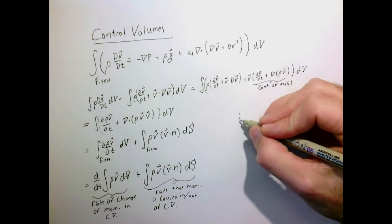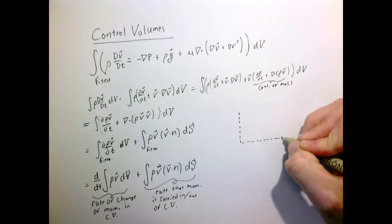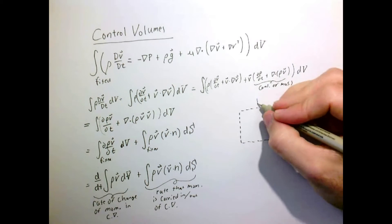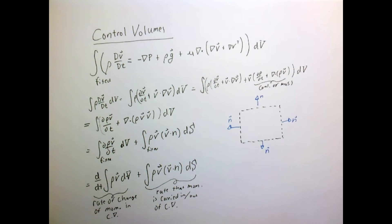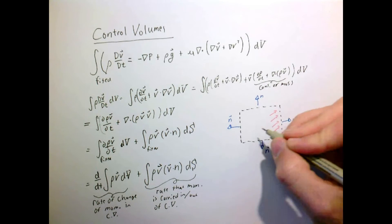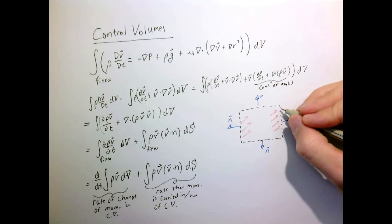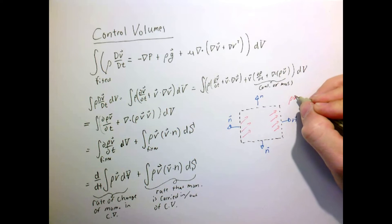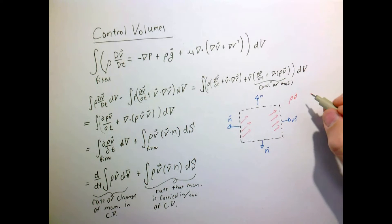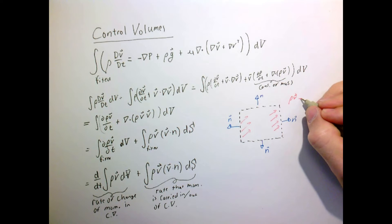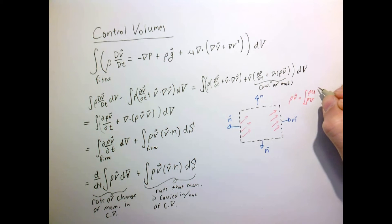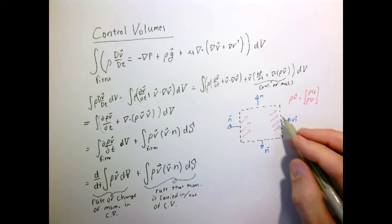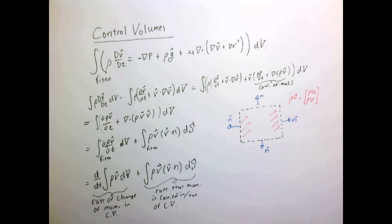Let's take a simple example where our control volume is just a square. On this square, the normal vector points outward everywhere. Imagine we have some velocity field, and we get momentum by multiplying by the mass density. In 2D, the x-component is rho times u, and the y-component is rho times v. That's our momentum field inside this box.